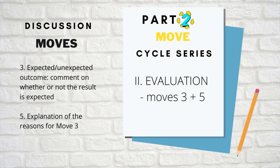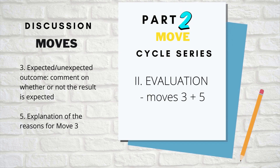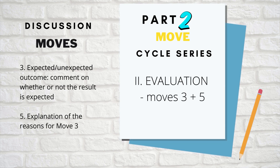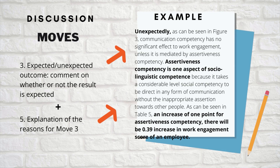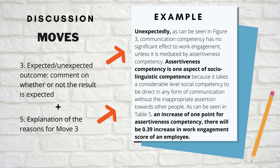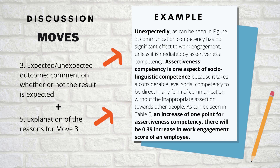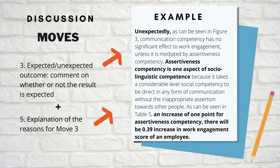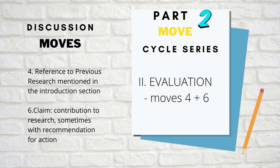The fourth combination is move three plus five: expected or unexpected outcome, plus explanation of the reasons for move three. For example: 'Unexpectedly, as can be seen in figure three, communication competency has no significant effect on work engagement unless it is mediated by assertiveness competency.' Followed by the explanation: 'Assertiveness competency is one aspect of sociolinguistic competence because it takes a considerable level of social competency to be direct in any form of communication without inappropriate assertion towards other people. As can be seen in table five, an increase of one point for assertiveness competency will result in a 0.39 increase in work engagement score of an employee.'